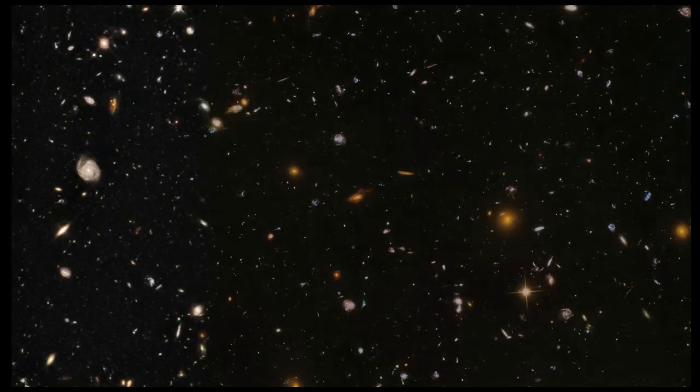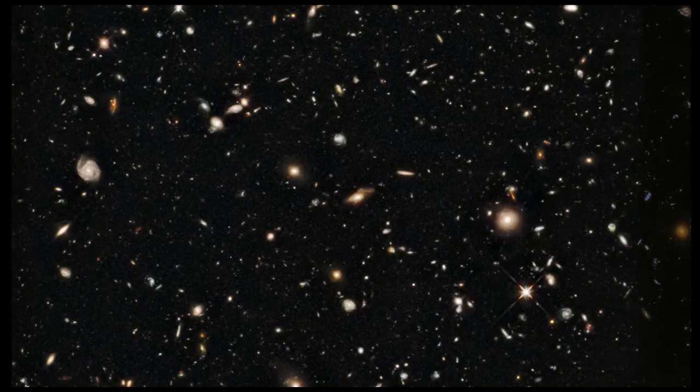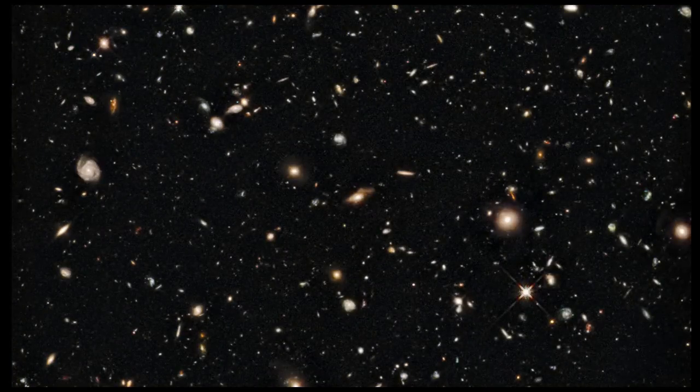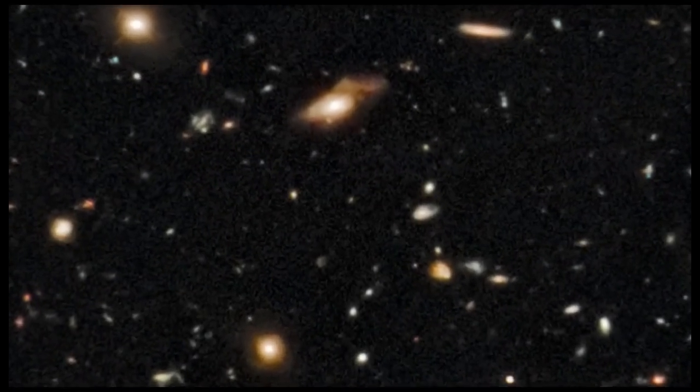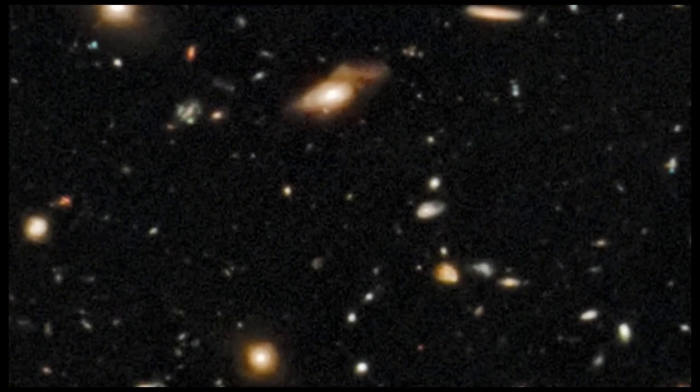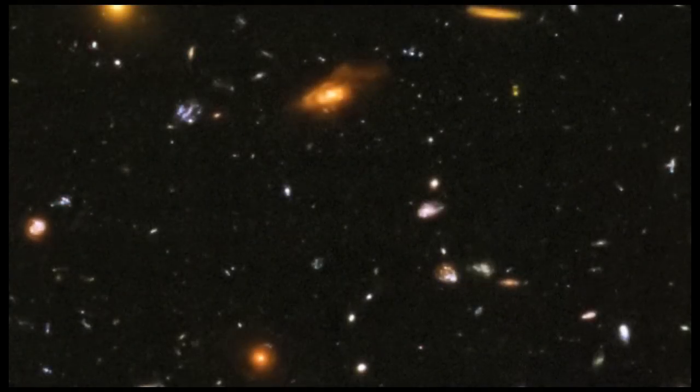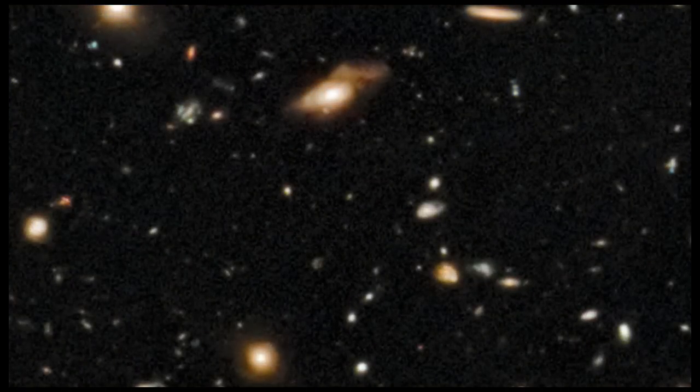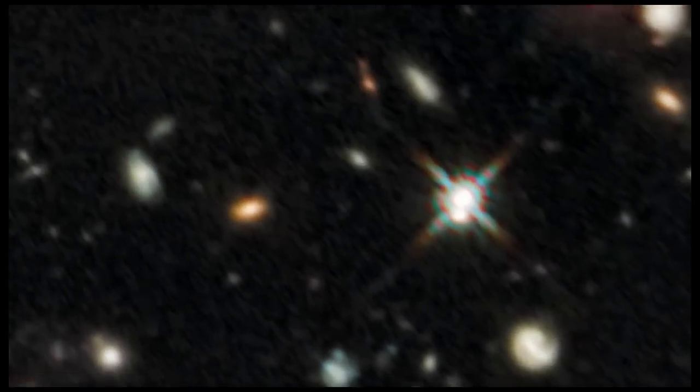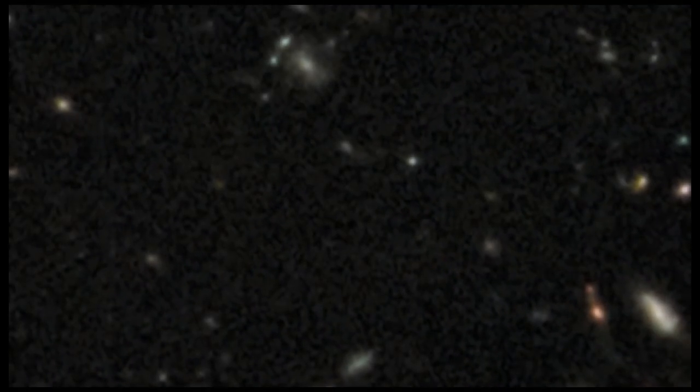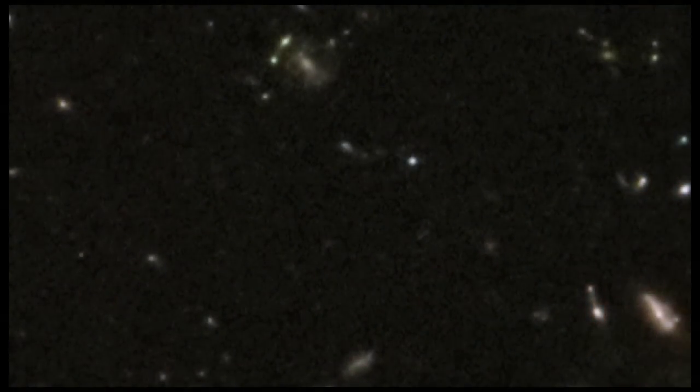Studying the same region with WFC3's infrared imaging reveals galaxies more distant still. Some of these are so far away that they have been redshifted out of the visible spectrum altogether. We see galaxies here as they were many billions of years ago. When the light from some of these galaxies started its journey towards us, our Sun and Earth had not even begun to form.